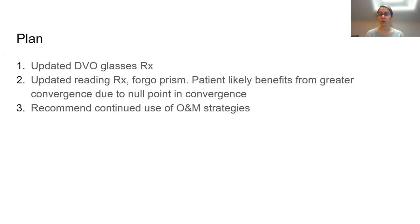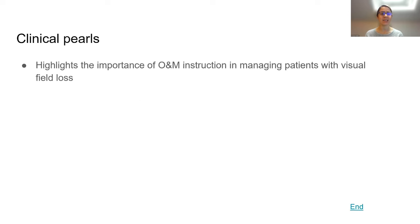We updated the patient's distance glasses and reading glasses, with the patient preferring to skip the prism. Given her nystagmus null point in convergence, pulling reading material very close was actually helpful as it allowed her to more easily adopt her null point, whereas base-in prism would require less convergence with less impact on nystagmus. We also used a weaker reading prescription than she'd previously worn — another example where over-magnifying is problematic, and for patients with field loss, sometimes less magnification is more. We also recommended continued orientation and mobility strategies and were quite pleased with her cane skills.